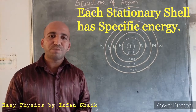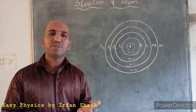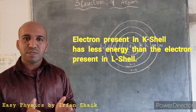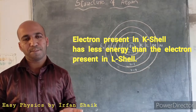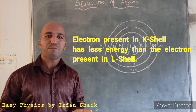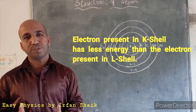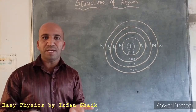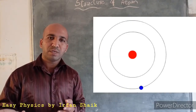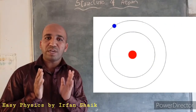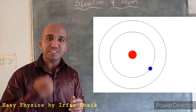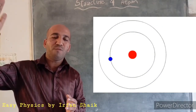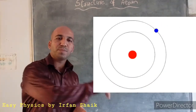Similarly, electrons present in the orbits also have specific energies. The electron in the K shell has less energy, and the electron in the N shell has more energy. When an electron jumps from one orbit to another — for example, from the K shell upward — it must gain energy. When an electron in an upper shell loses energy, it jumps to a lower shell.